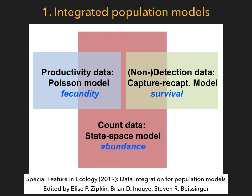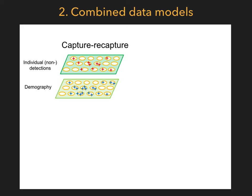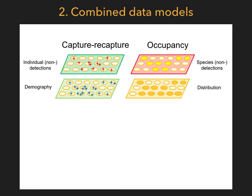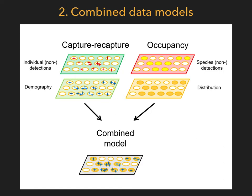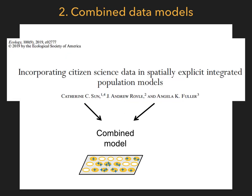I recommend this recent special feature in Ecology led by Elis Zipkin and colleagues if you are interested in the topic. Another way of combining different sources of information does not require a projection matrix to link all models together. Take capture-recapture data: we may distinguish the observations — detections and non-detections — from what we'd really like to say something about, the demography. We can then combine with data on unmarked individuals, like occupancy data — detections and non-detections on the species — which bring information on species distribution. When the species is present in a patch, it means there is at least one animal, which is information that may be shared with capture-recapture data to improve estimation of abundance. I recommend this paper by Katherine Sun and colleagues if you'd like to know more.